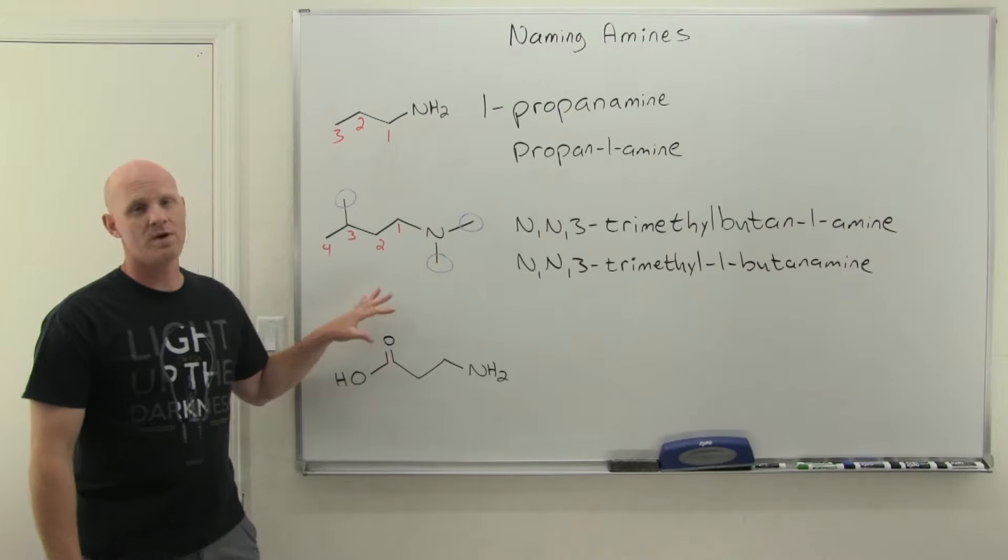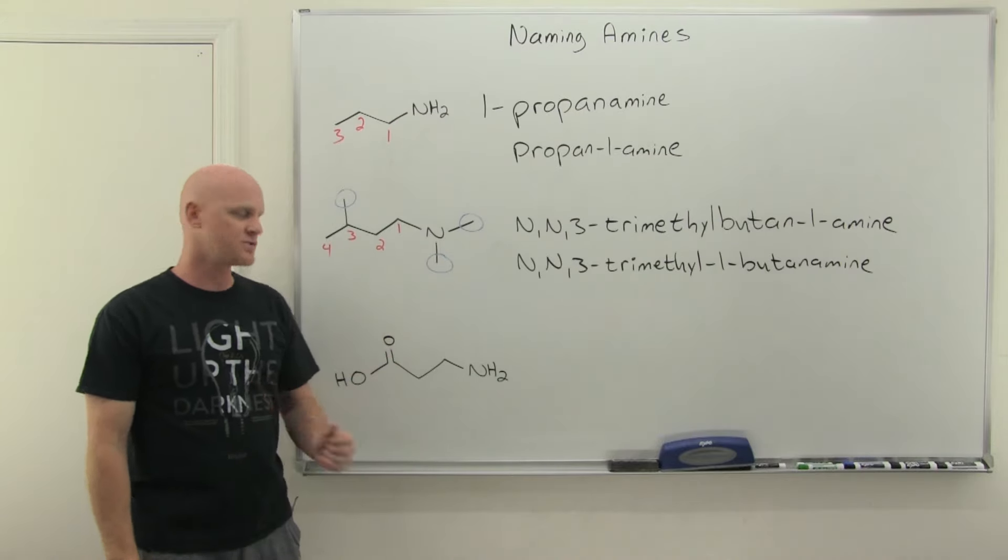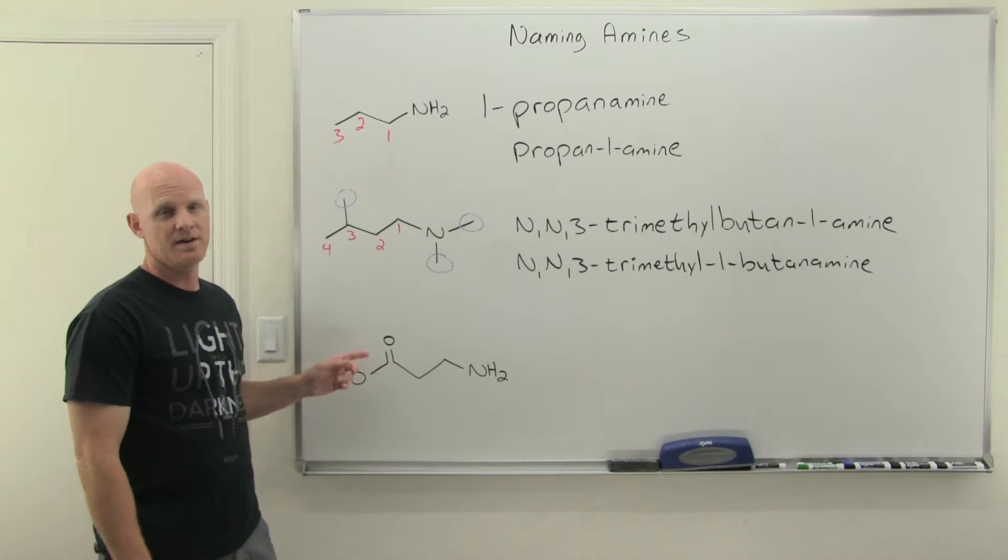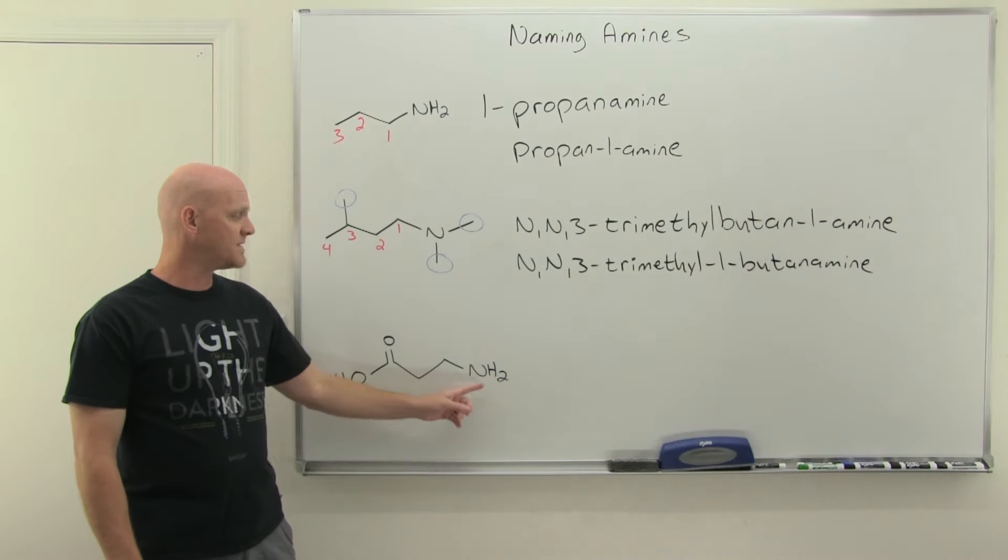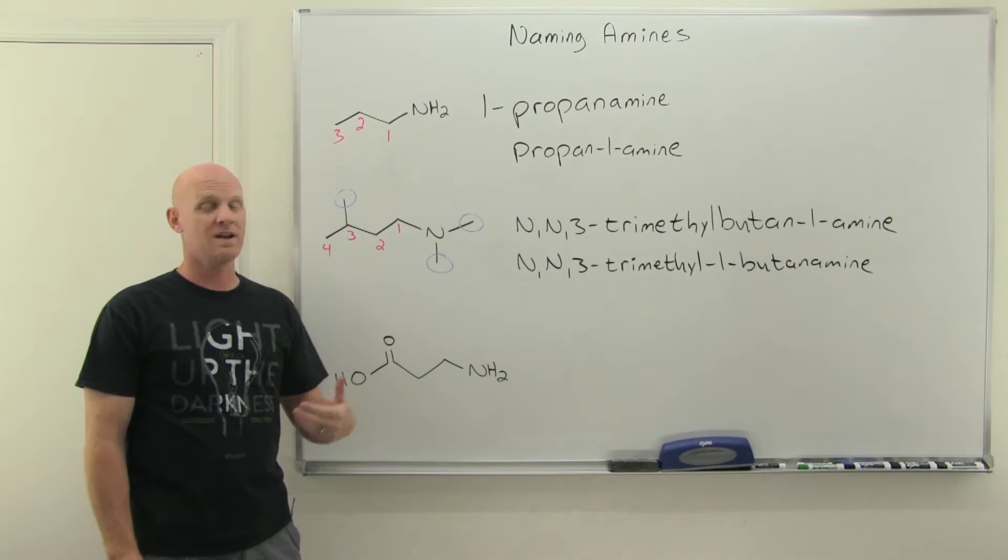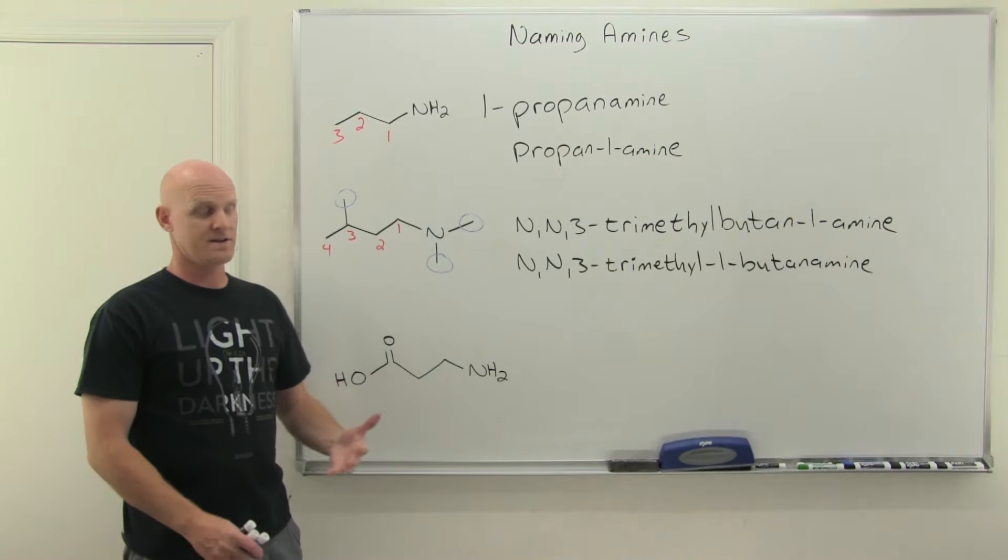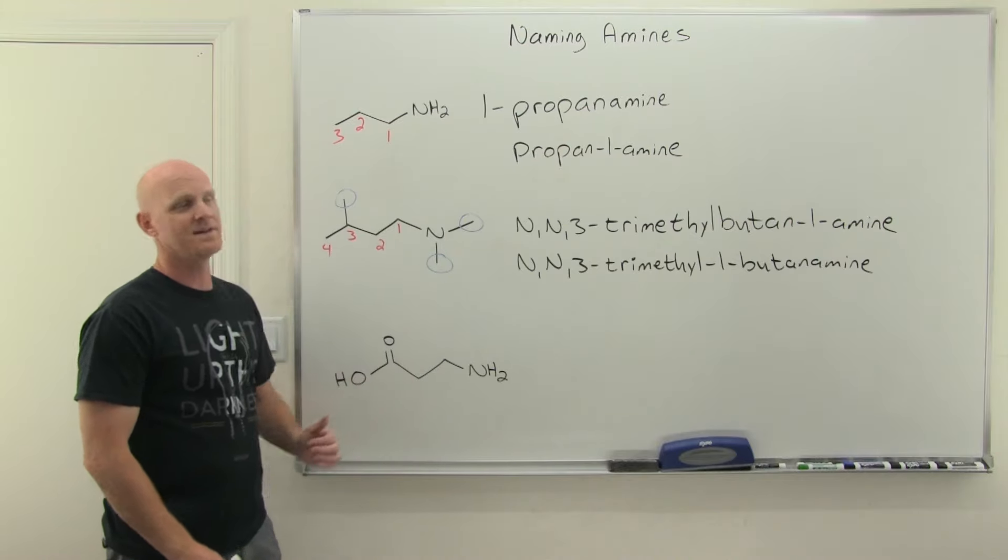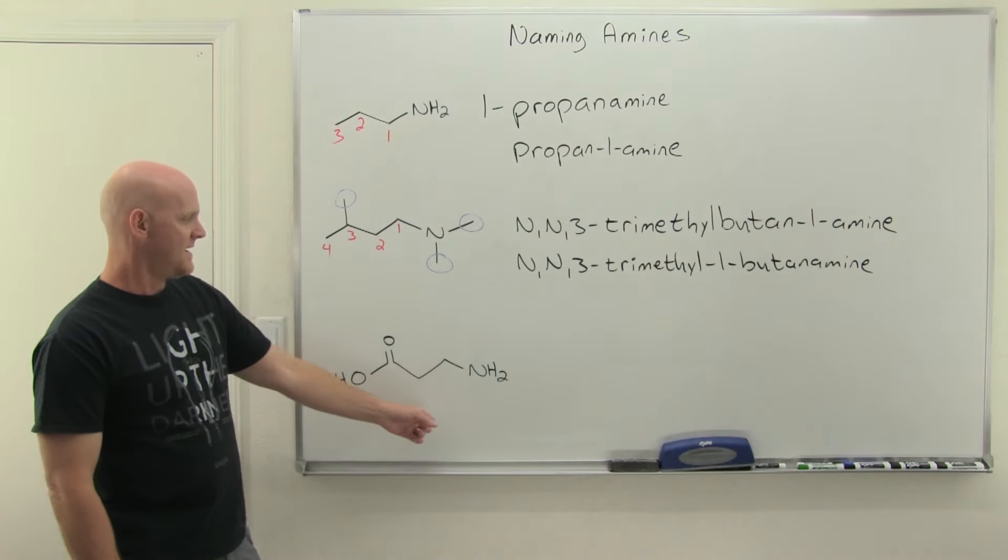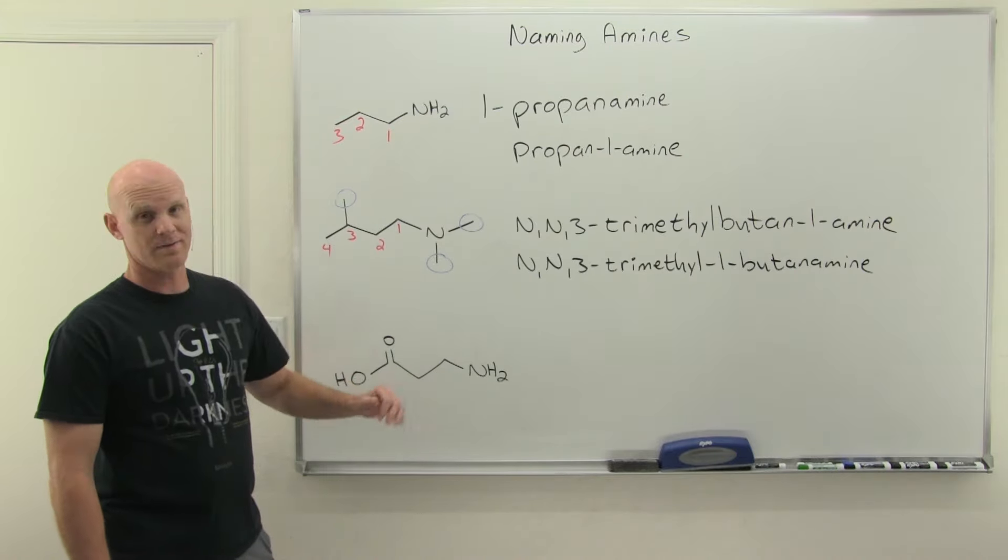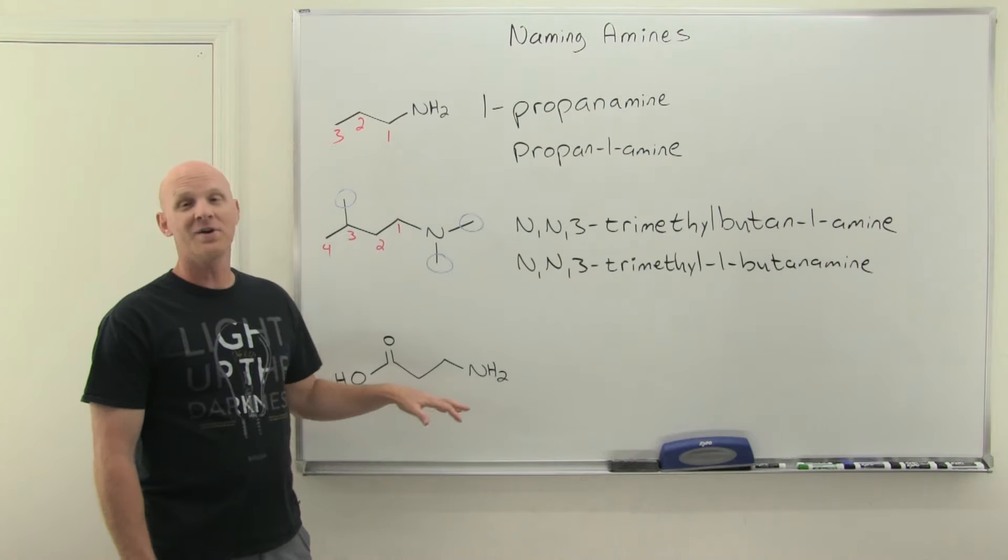Last example here is where the amine is not the highest priority function. We've got it with a carboxylic acid, which is top dog, so it's definitely higher priority than the amine. In this case, we're going to name the amine as a substituent. You're just going to name it as an amino substituent. Technically, this is an amino acid. Actually, it is one of your standard amino acids.